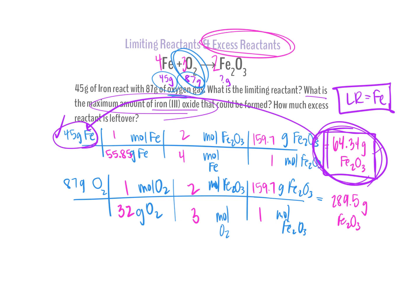So now that we know, let's go back up here. We know that iron is our limiting reactant. And so we know that this must then be in excess. That's going to be our excess reactant. It's going to be left over.